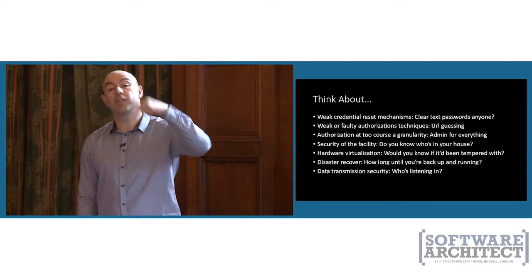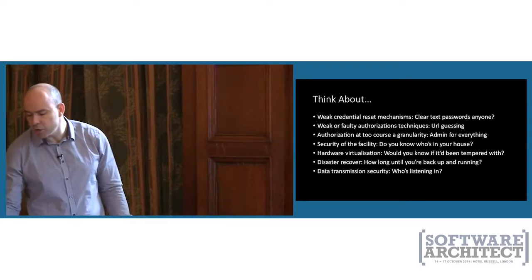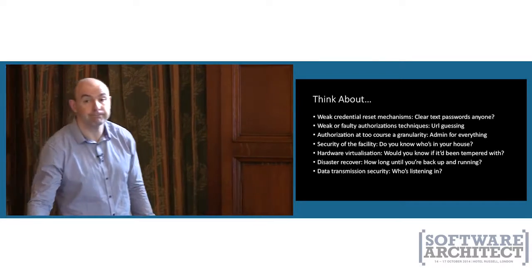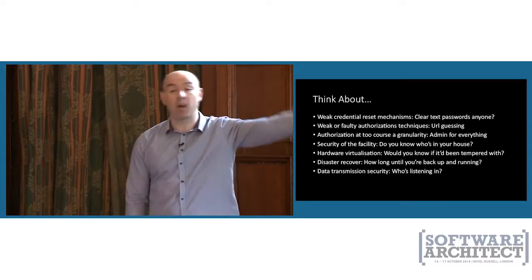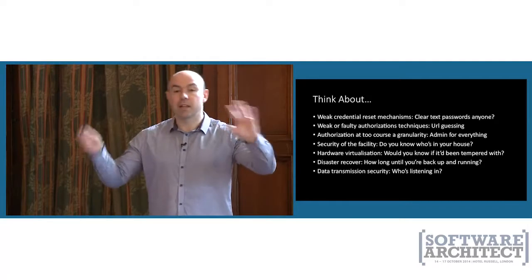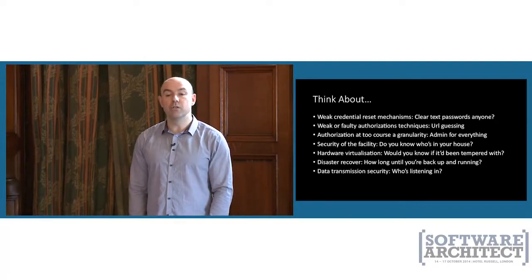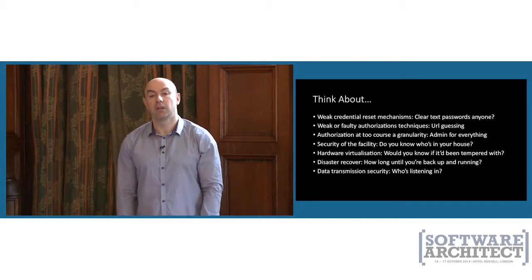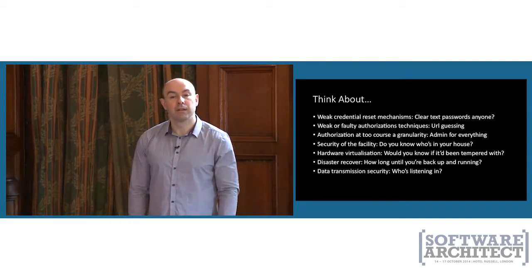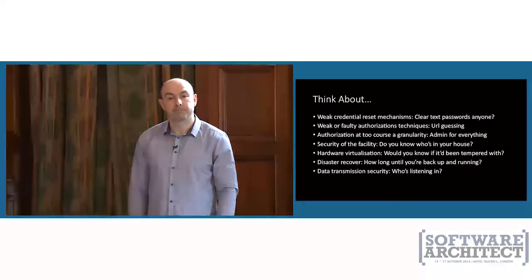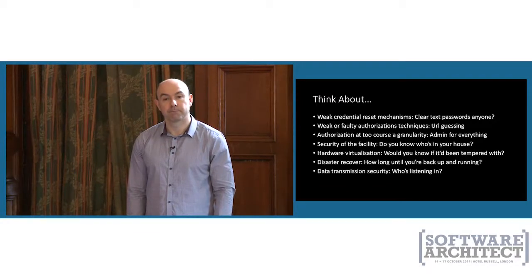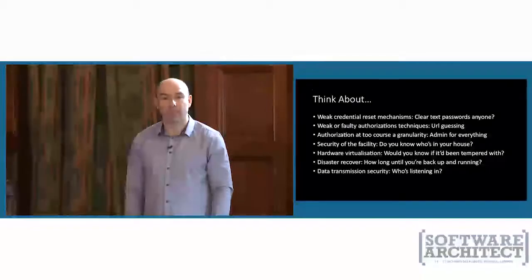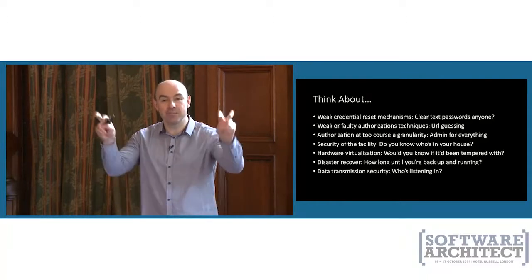If you have a disaster recovery plan, it needs to be tested, and tested often — just because it worked three months ago doesn't mean it'll work now. Those with a disaster recovery plan they test: how often? Twice a year. The trouble is, we shut everything down in a controlled way, fail over to another data centre, and see if it starts up again. But that's not how a real disaster works — the clue's in the name. We've never actually tested an uncontrolled failure.